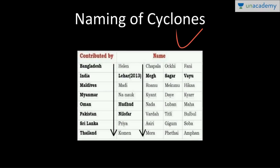Cyclone naming exists to ease communication between experts and the general public regarding warnings and forecasts. In World War Two times, people began naming them. In most regions a predetermined alphabetical list is used, alternating between male and female names. In the northwest Pacific region, names are mostly not personal names but refer to flowers, animals, foods, or descriptive adjectives. By the mid-1960s all tropical storms except in the north Indian Ocean were being named.